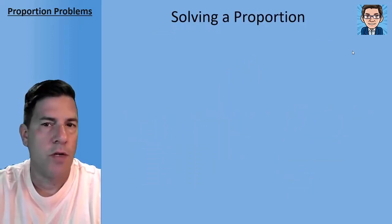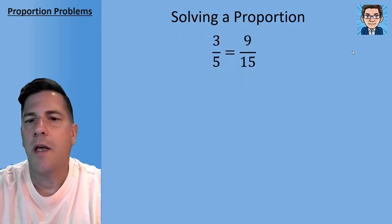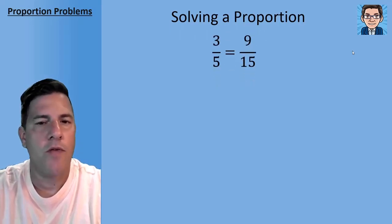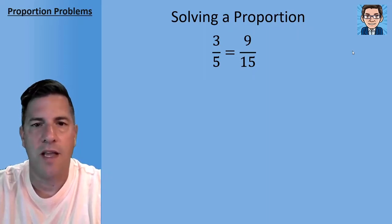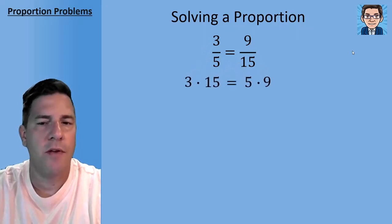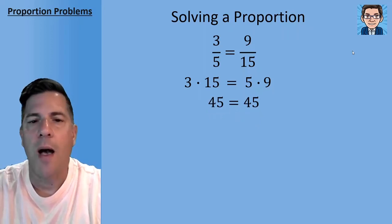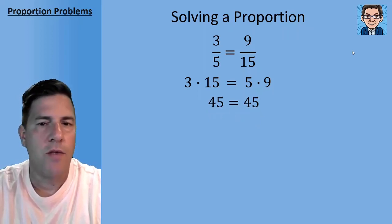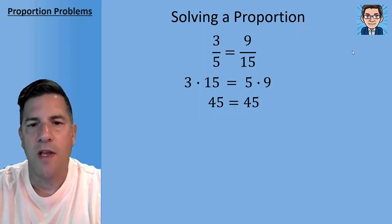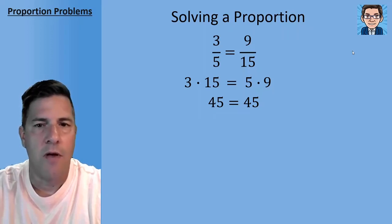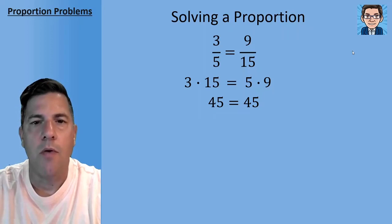So now solving proportion, we can notice that back in that proportion, 3/5 equals 9/15, the two diagonals are going to multiply to the same thing when you've got a proportion. So the 3 times the 15 and the 5 times the 9 are both going to equal 45. We're essentially putting it over a common denominator and that's why this works. So the 3 times the 15 and the 9 times the 5, the two diagonals are always going to be equal when two fractions are set equal to each other.